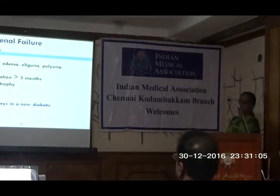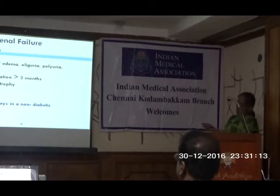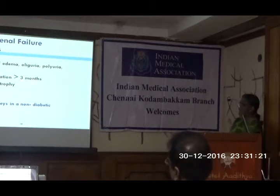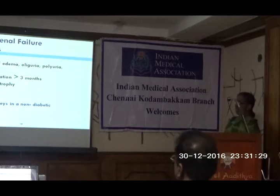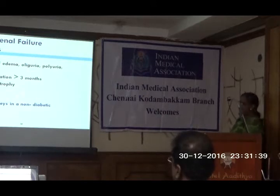Diagnosis of CKD usually involves a long-standing history of edema, oliguria, polyuria, or proteinuria. Creatinine elevation persisting for more than three months and evidence of renal osteodystrophy are important clues. When a patient presents without previous lab work, finding elevated PTH and phosphate levels, anemia, acidosis, and other electrolyte abnormalities suggests long-standing renal disease, because these findings do not develop over a period of just a few weeks or a month.